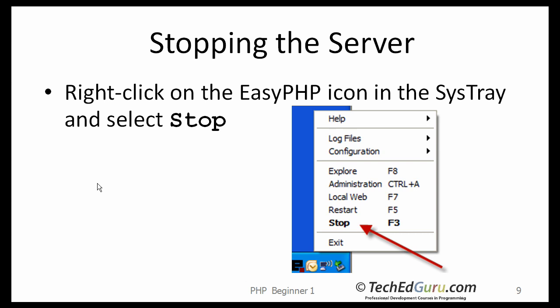When you are done testing PHP, right-click on the icon in the system tray and click on Stop. This will stop PHP from running. You can also exit out completely, but if you do, you will have to restart the application. If you just stop it, you can restart it for more testing.